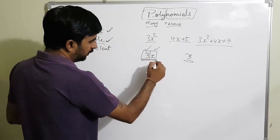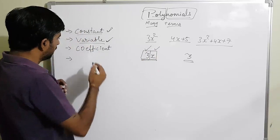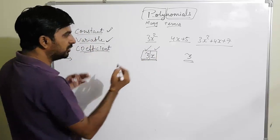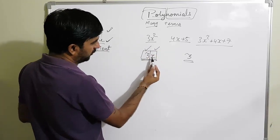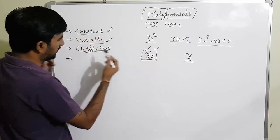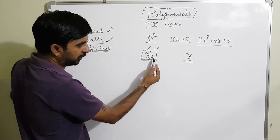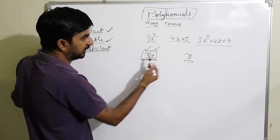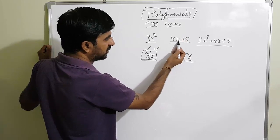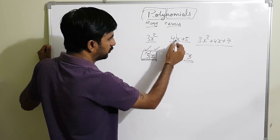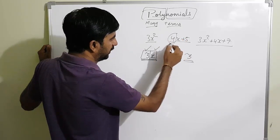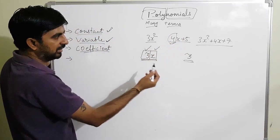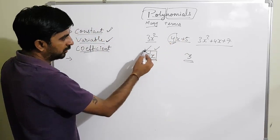This is a term of a polynomial. Now, what is a coefficient? The numerical value that is associated with a variable is called its coefficient. For example, if I ask: what is the coefficient of x in 3x? Here the coefficient of x is 3. The constant value with the variable is called the coefficient.